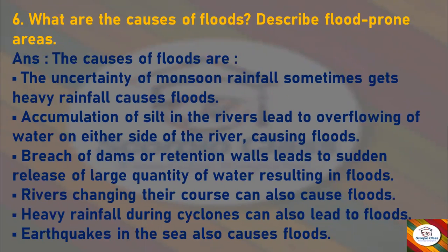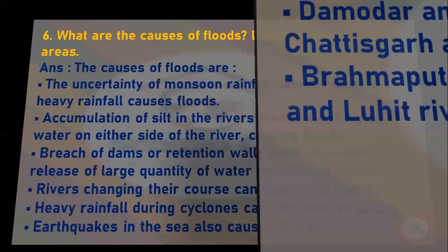What are the causes of floods? The causes of floods are: uncertainty of monsoon rainfall — sometimes heavy rainfall causes floods; accumulation of silt in the rivers leads to overflowing of water on either side; breach of dams or retention walls leads to sudden release of large quantities of water resulting in floods; rivers straining their course can also cause floods; and heavy rainfall during cyclones and earthquakes in the sea can also lead to floods.